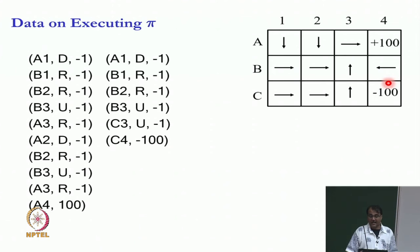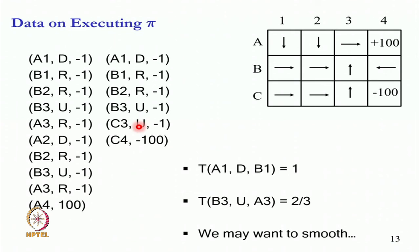Now, given this, can I estimate the probability of let us say transition function A1, D, B1. What is the probability that in state A1, when I take the down action, I go to B1. What is the probability that in state B3, I take the up action and go to A3. So in state B3, I take the up action and I go to A3. What is the probability? Well, B3 to A3 happens twice, but B3 to C3 happens the third time. So that probability would be 2 by 3. And of course, we do not want 1s and 0s, so we may want to smooth these things.